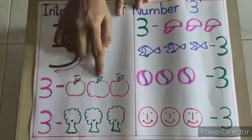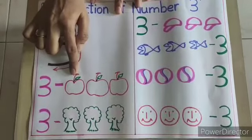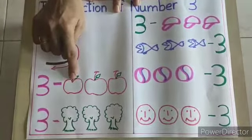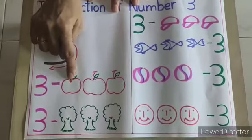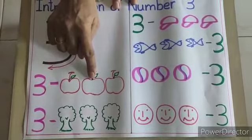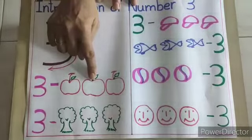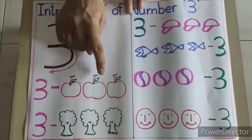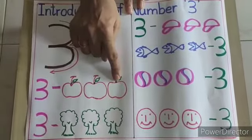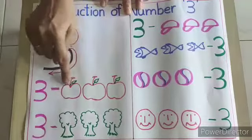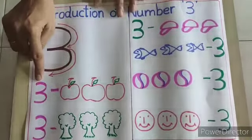So let us count the objects. So while counting, you have to keep your pointer finger on the first object and say orally number 1. Then move your finger to next object and say number 2, because after number 1, number 2 comes. Then move your finger to next object and say number 3. So there are 3 apples in front of number 3.